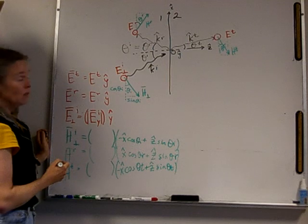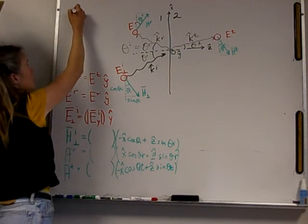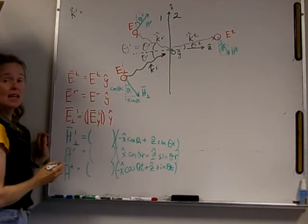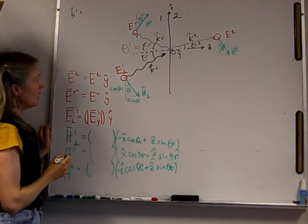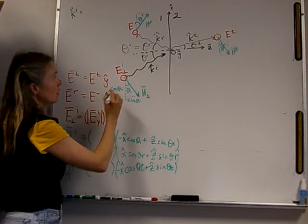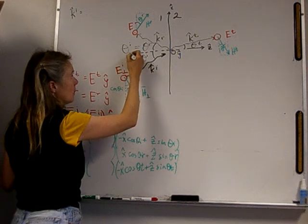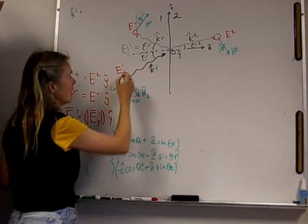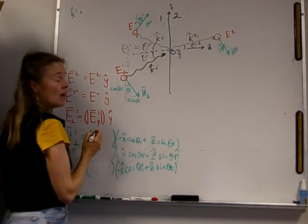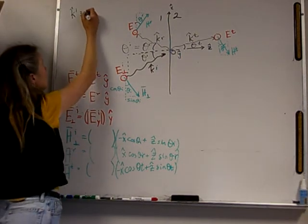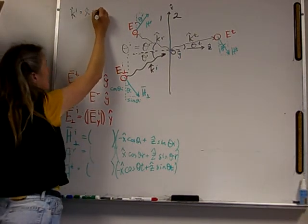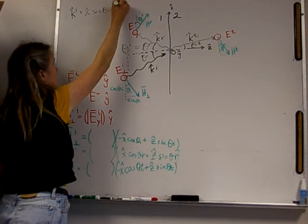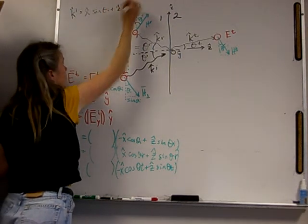Let's write each of these using geometry. Let's write the unit vector Ki that represents the direction of propagation for the incident field. We can see that it is going in the Z direction with a cosine of theta, and in the positive X direction with a sine of theta. So this is X sine of theta I plus Z cosine of theta I.